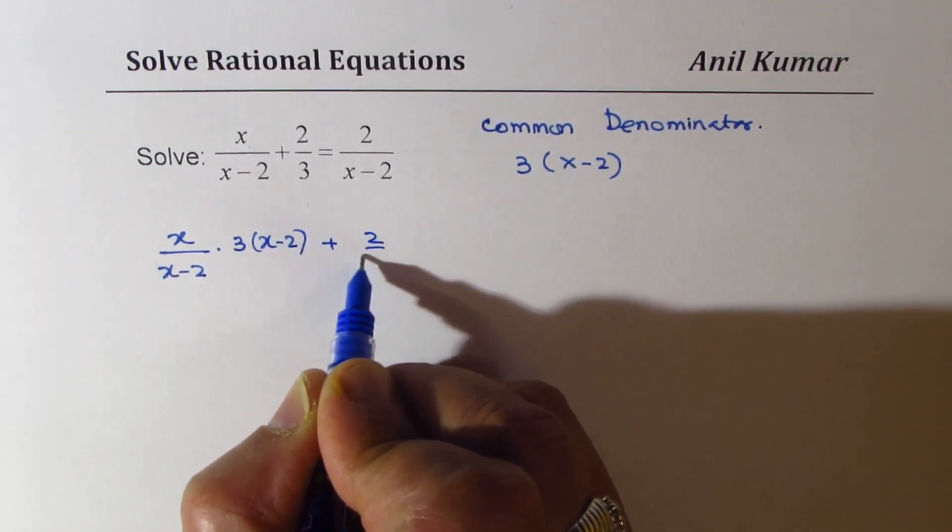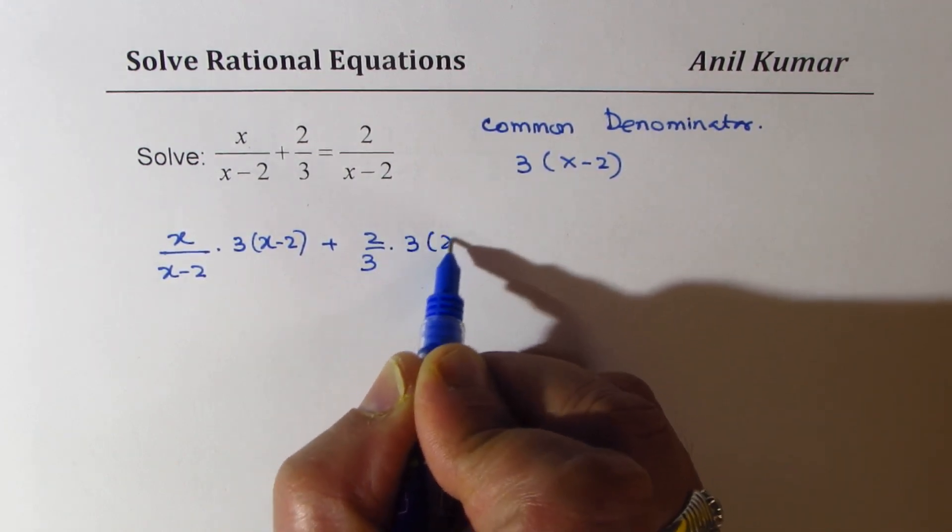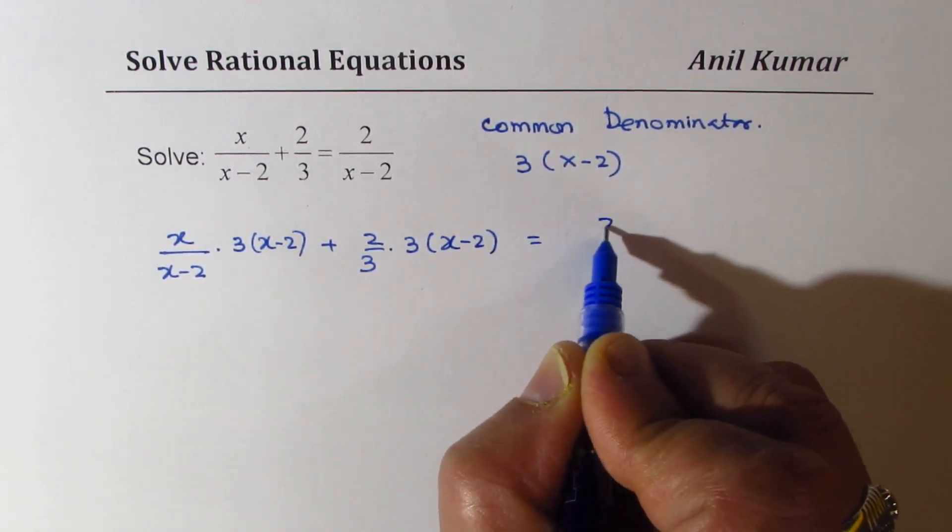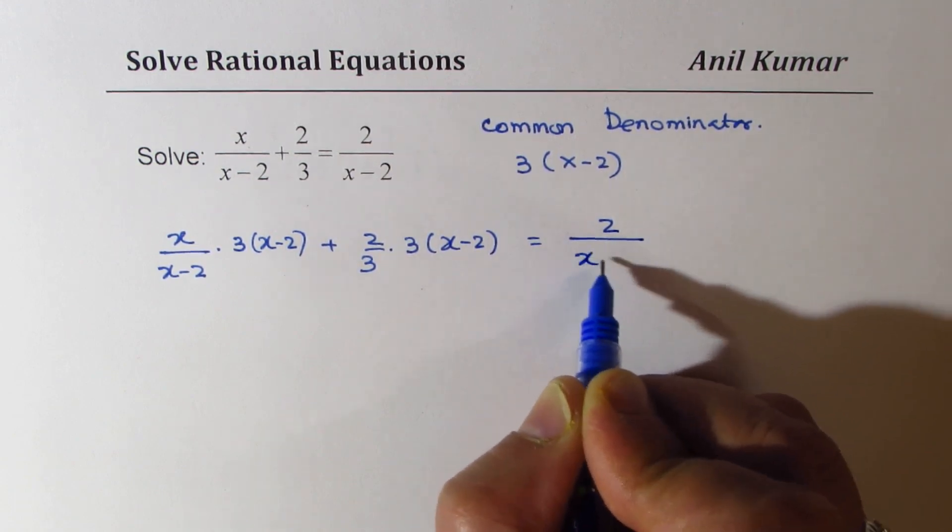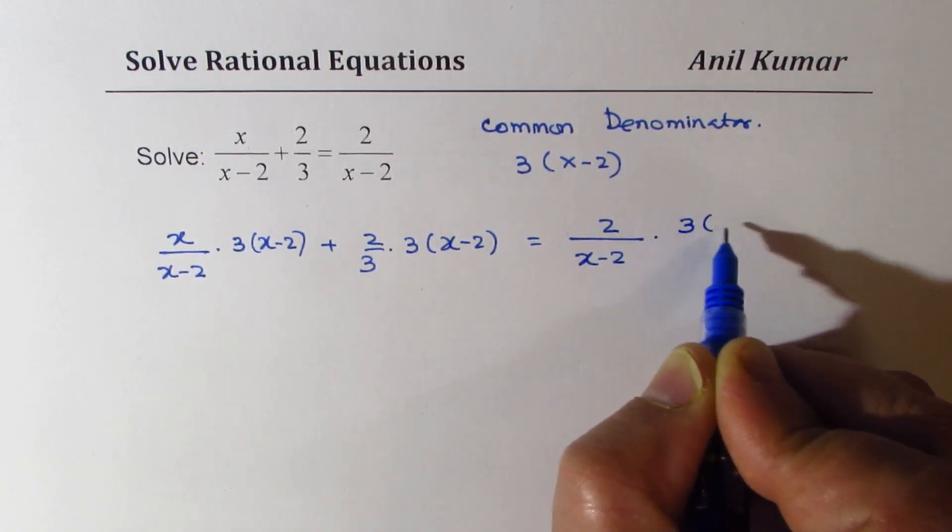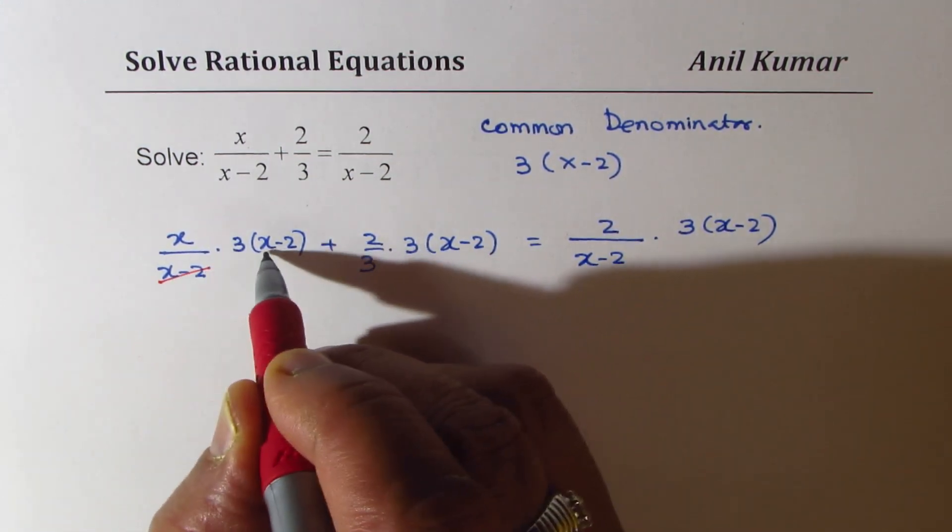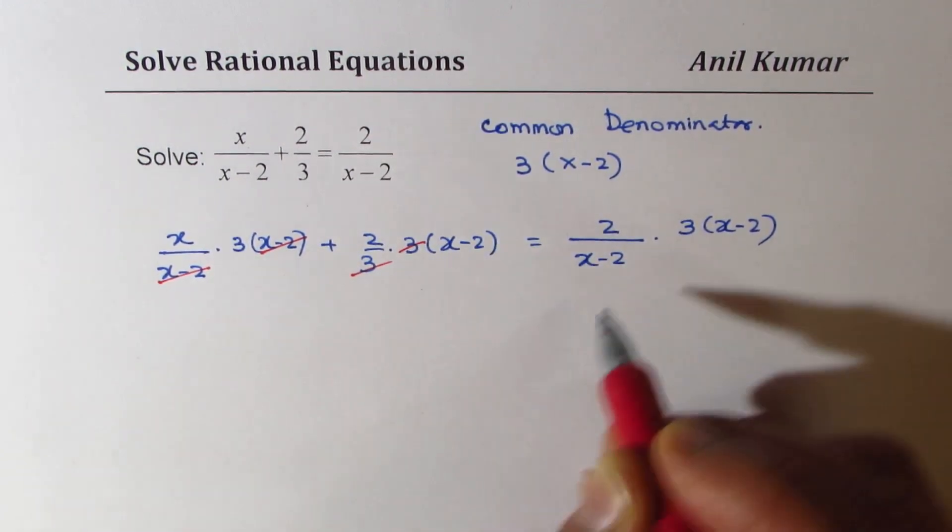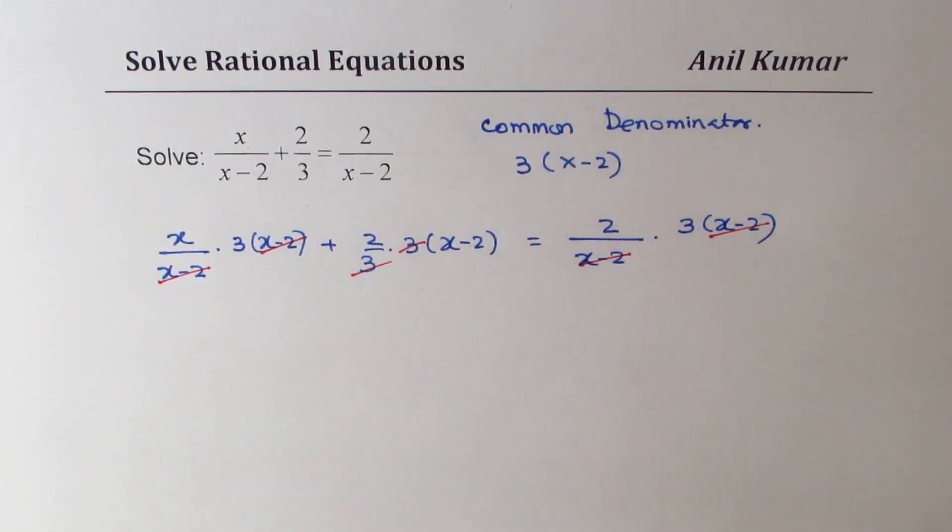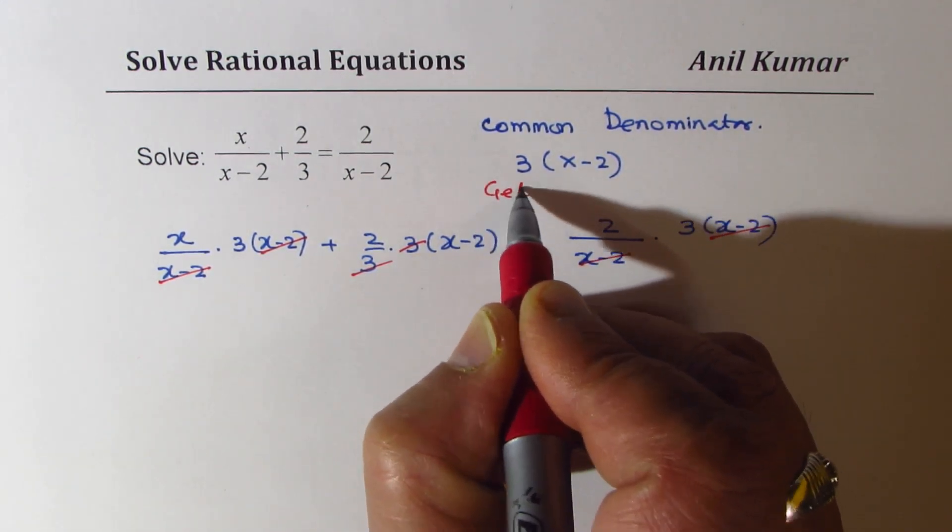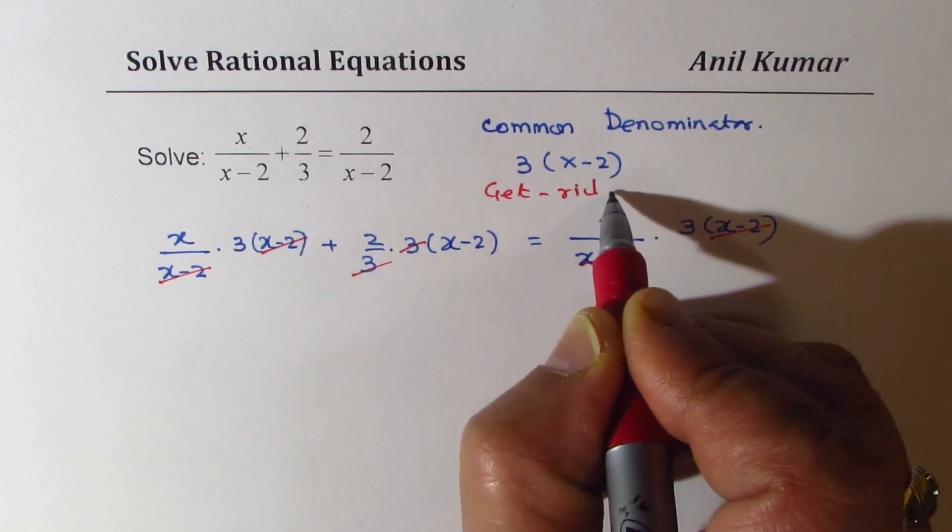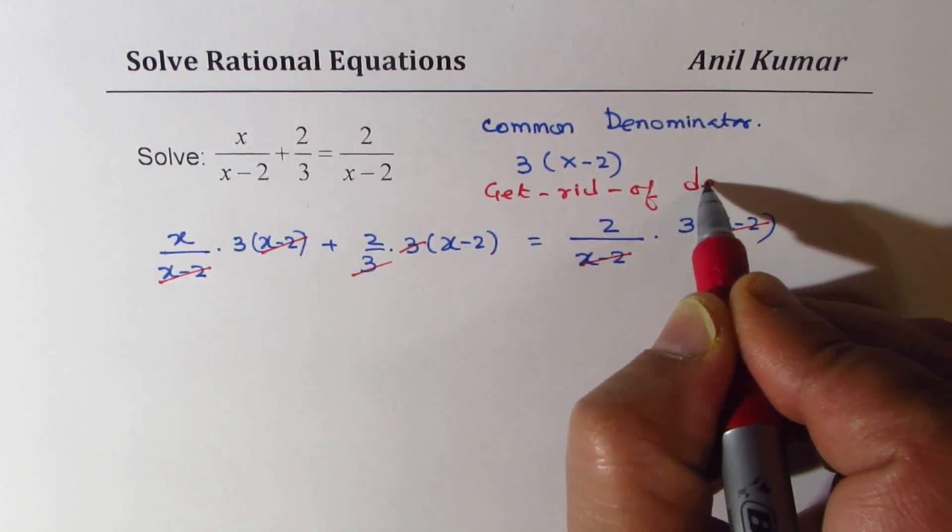Basically, we have this equation x over x minus 2. We will multiply this by 3 times x minus 2. Then we have 2 over 3. We will again multiply this by 3 times x minus 2 equals to 2 over x minus 2. So the idea is to get rid of fractions, the denominator part. So with this x minus 2 x minus 2 cancels. Here, 3 3 cancels and this x minus 2 cancels with x minus 2.